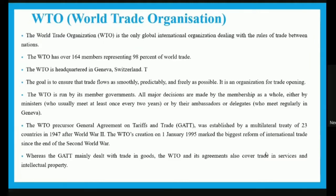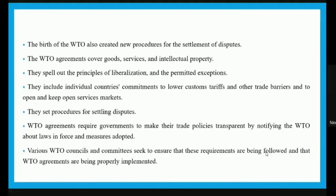The WTO succeeded GATT. GATT was established by 23 countries in 1947 after World War II. The WTO's creation on 1st January 1995 marked the biggest reform in international trade since the end of the Second World War. Whereas GATT mainly dealt with trade in goods, the WTO's agreements also cover trade in services and intellectual property. The birth of the WTO also created new procedures for the settlement of trade disputes.